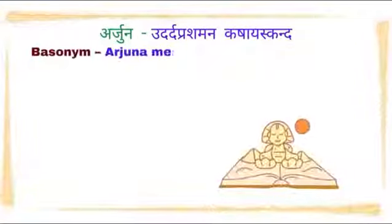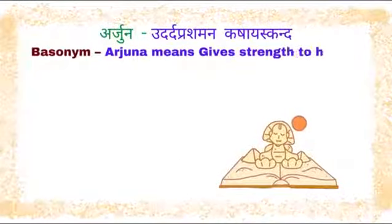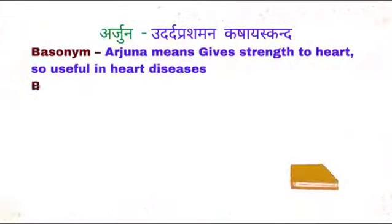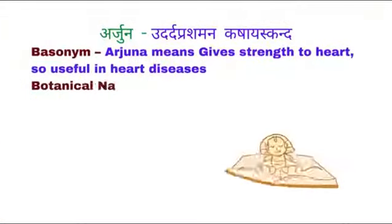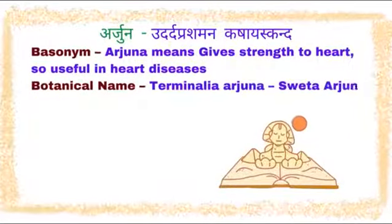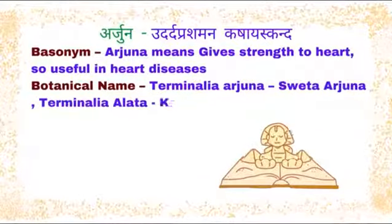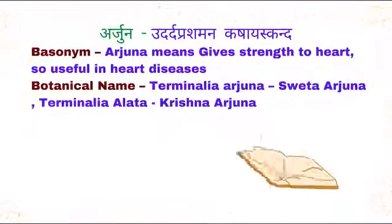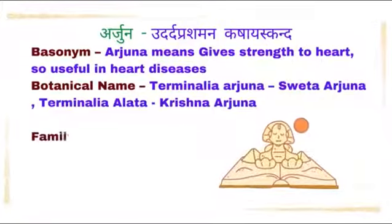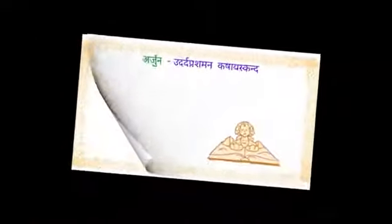Arjuna – Udhalda, Prashamana, Kshayaskanda. Arjuna means 'gives strength to heart,' so it is useful in heart diseases. Botanical Name: Terminalia Arjuna (Shweta Arjuna) and Terminalia Alata (Krishna Arjuna). Family: Combretaceae.